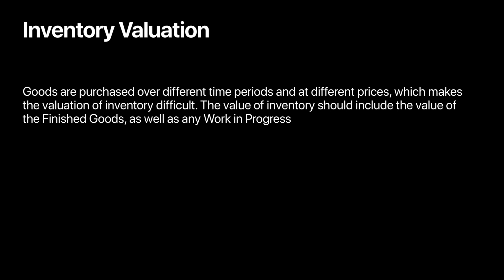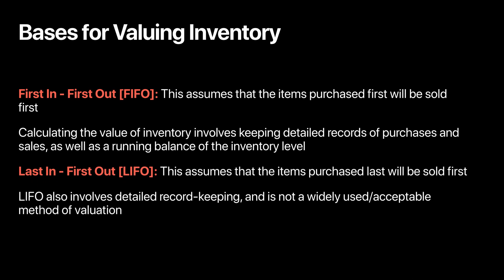We need to learn how to value our inventory. This value should include finished goods as well as work in progress. There are different ways specified as to how we can value inventory. The first one is the first-in first-out (FIFO) method. This method assumes that items purchased first will be sold first. So if you buy a good in January and then in February, you will first sell the good purchased in January and then the one purchased in February. FIFO keeps a record of different purchases and sales, and a running balance helps us calculate the value of inventory. We will illustrate that in the coming video.